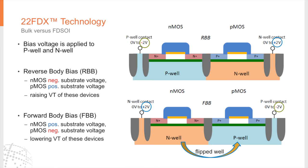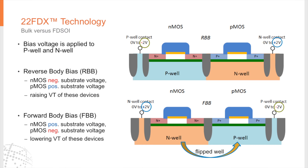In 22FDX technology we offer two types of device structure. One of them uses reverse body bias and the other uses forward body bias. The reverse body bias device is the traditional CMOS structure — we have NMOS on the P-well and PMOS on the N-well. When we start applying body bias on the substrate we can raise the threshold voltage of those devices.